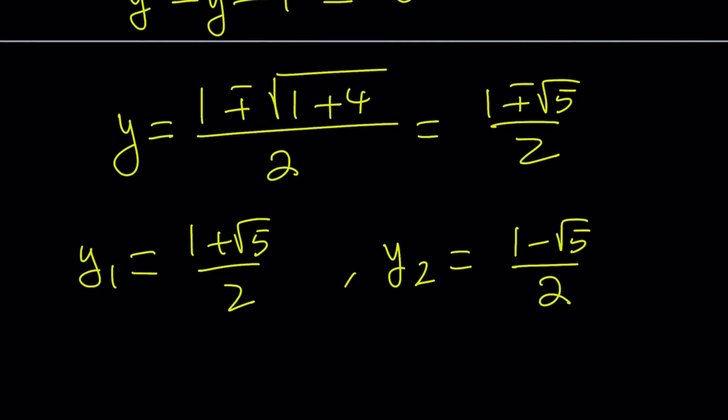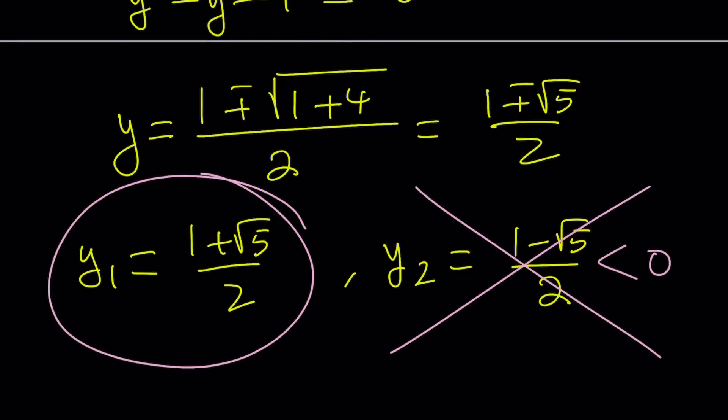1 minus root 5 over 2 is less than 0. So we're not going to take it. Any negative number is out. So that's the only solution for y value, which means y is going to be constant. If you think about this on the x, y coordinate system, it's going to give you a horizontal line. But you'll see in a little bit some of the details. Make sense?